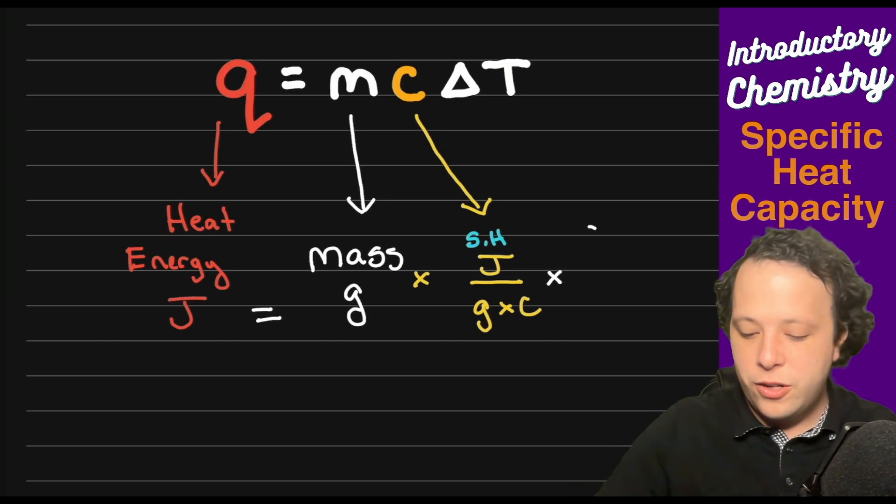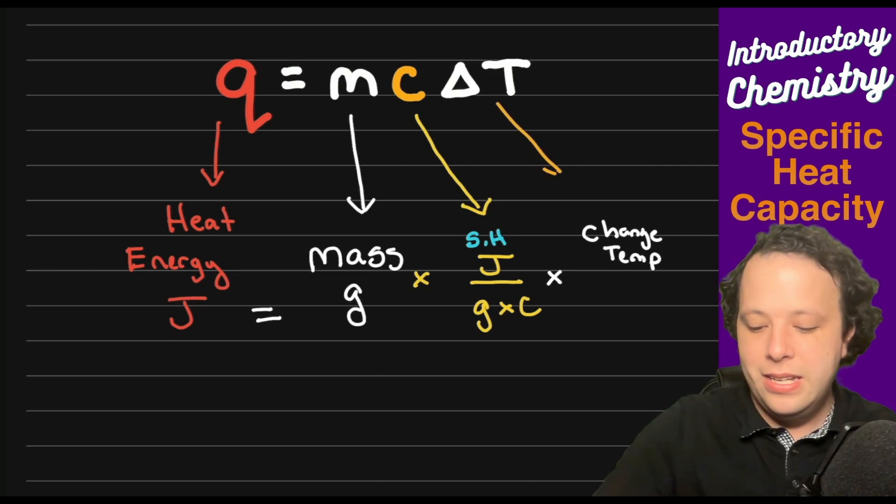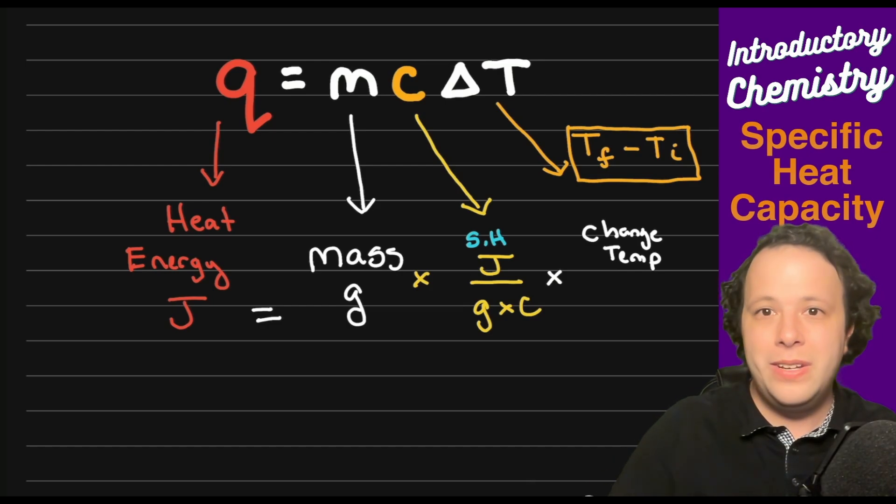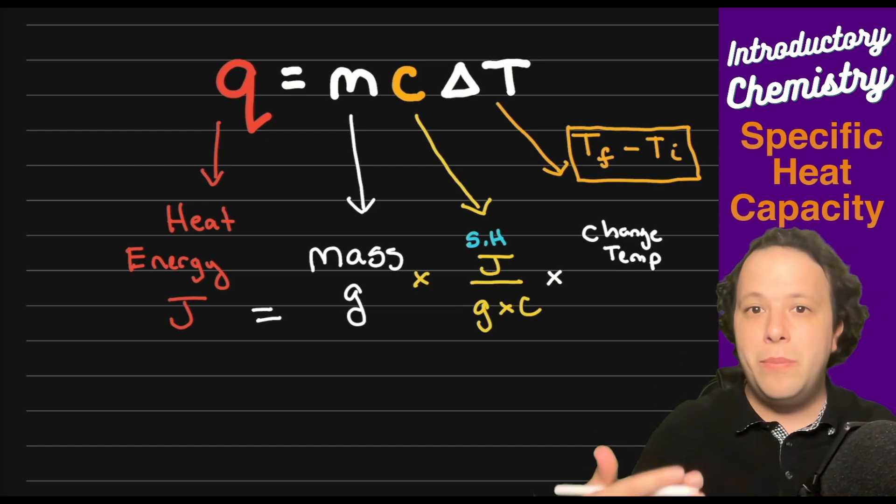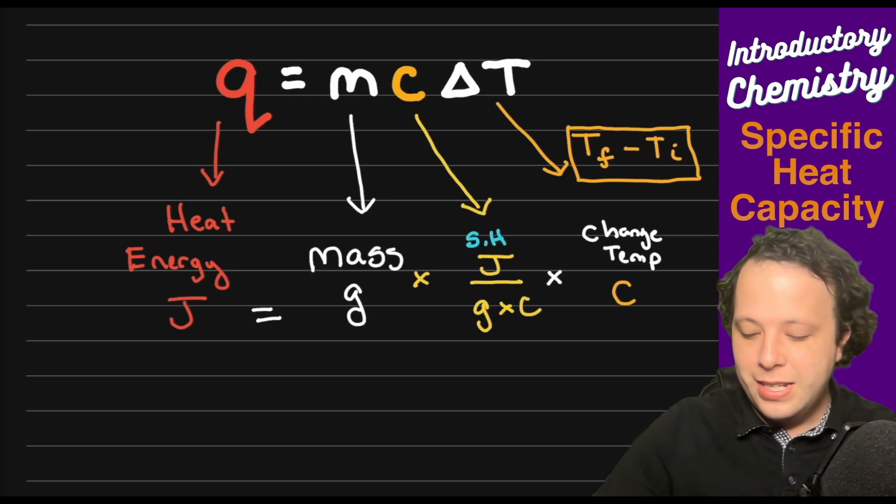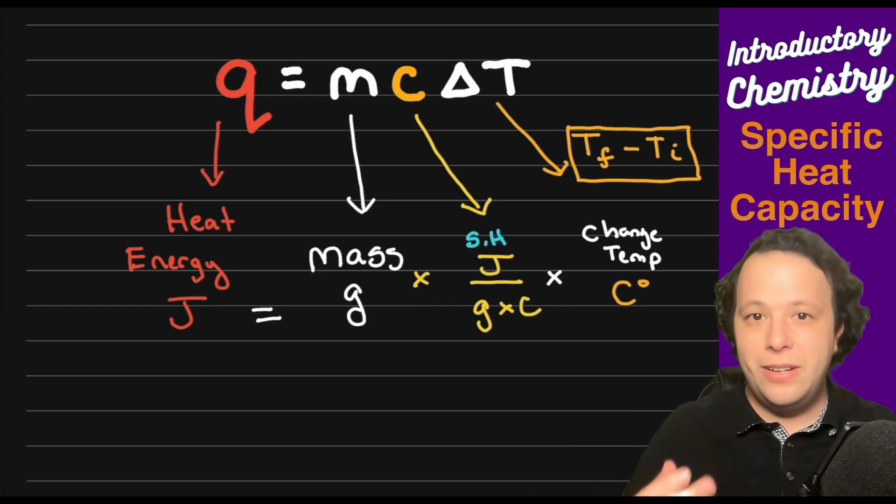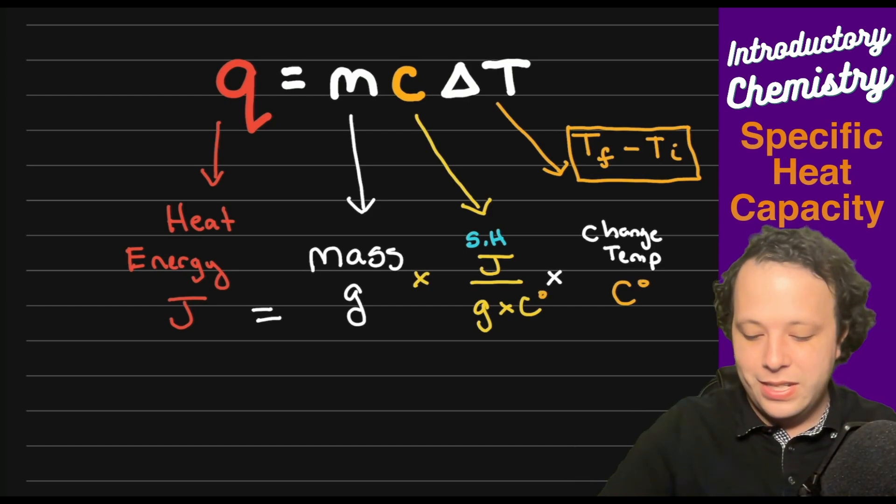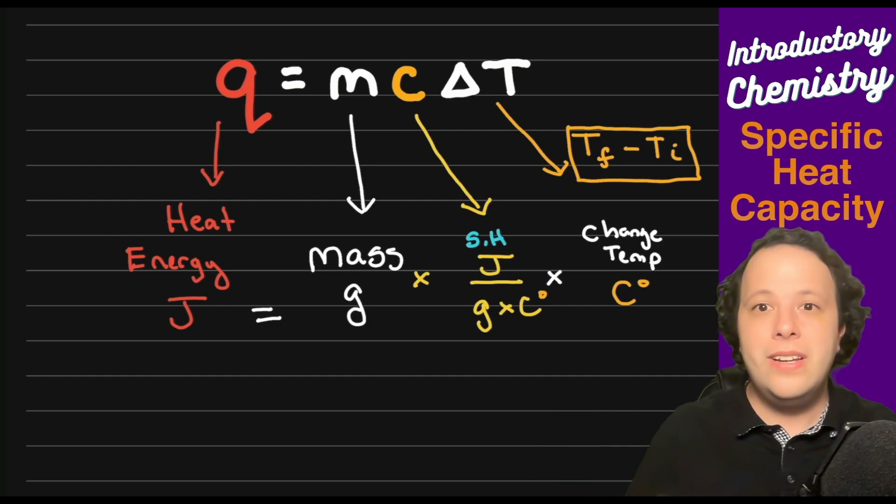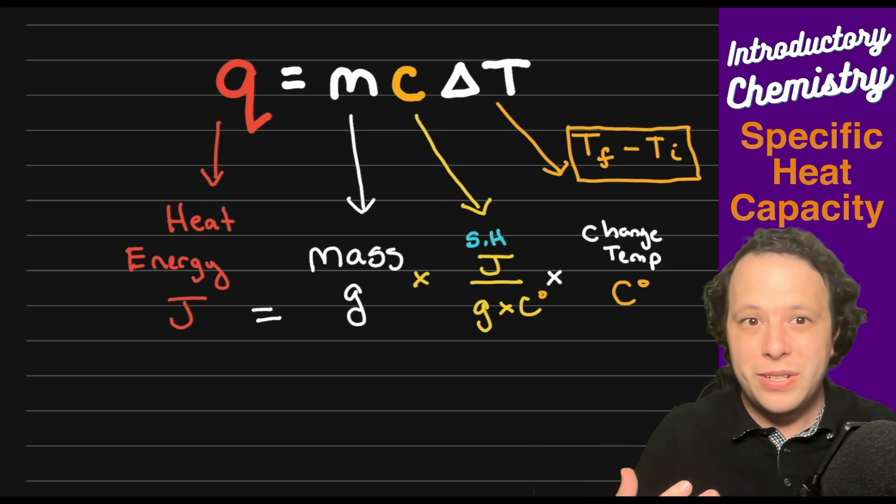Delta T is our change in temperature. When we talk about delta T, this is always about the final temperature minus the initial. If you see a delta, that's always final minus initial, and that's going to be reported in units of Celsius.